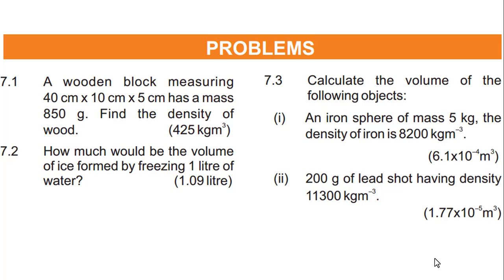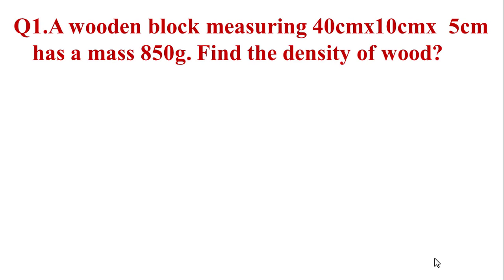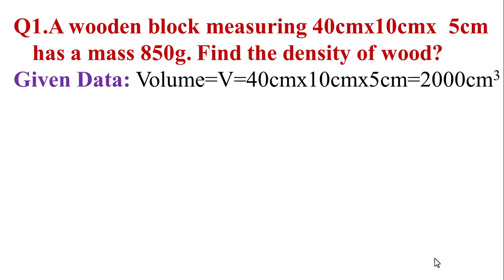In the first numerical, a wooden block measuring 40 cm x 10 cm x 5 cm has a mass of 850 grams. Find the density of wood. First of all, we write the given data. In the given data, 3 quantities are multiplied: length, width and height.